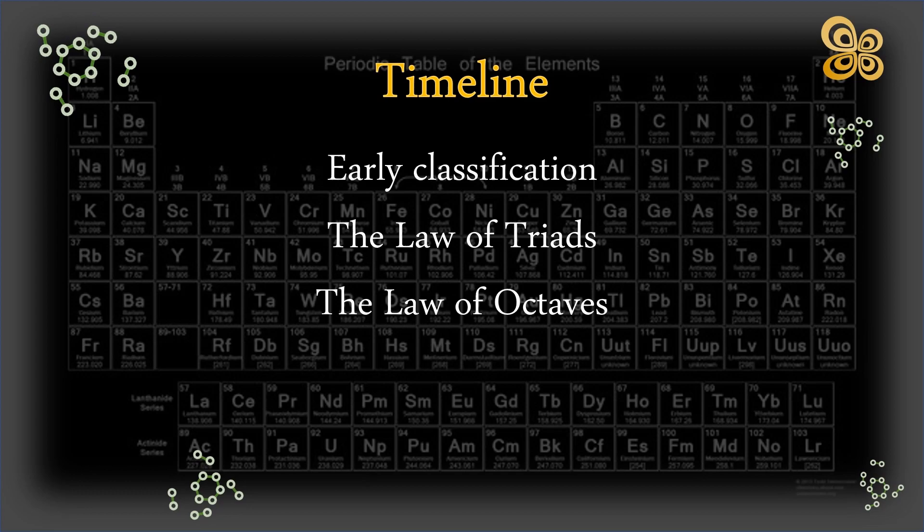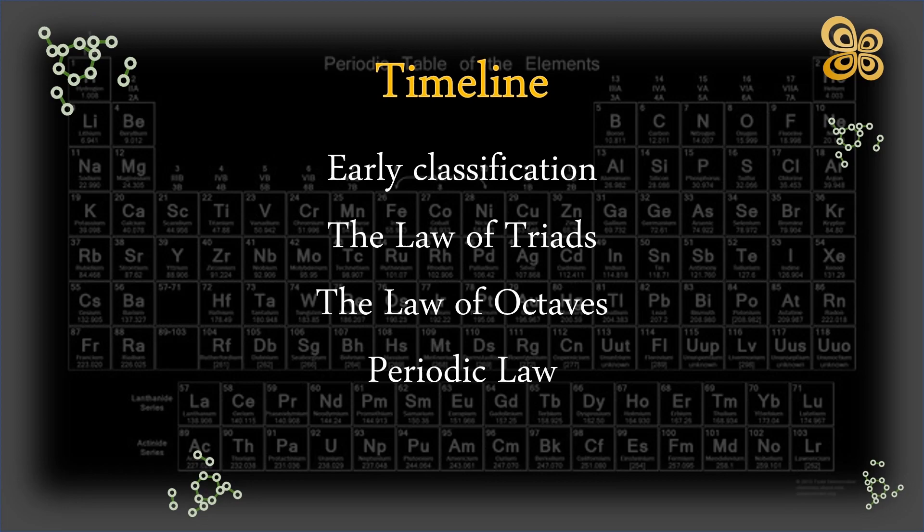Periodic law. The periodic law, which was independently created in 1869 by Dmitri Mendeleev and Julius Lothar Meyer, stipulates that when the elements are grouped in order of increasing atomic weight, their properties recur periodically.